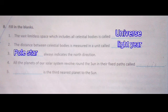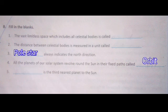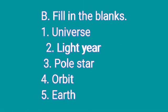Four: All the planets of our solar system revolve around the sun in their fixed paths called Orbit. Five: Dash is the third planet from the sun — that is Earth, where we live. Repeat the answers: one — Universe, two — Light Year, three — Pole Star, four — Orbit, five — Earth.